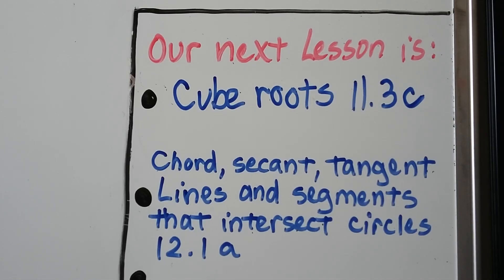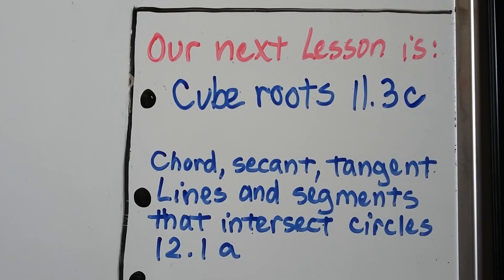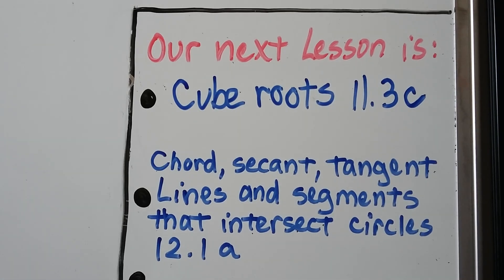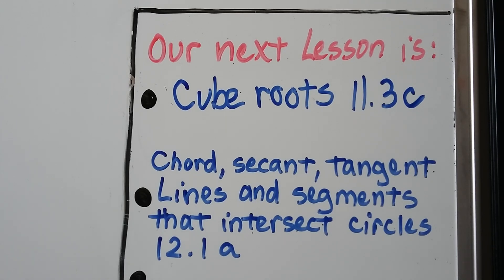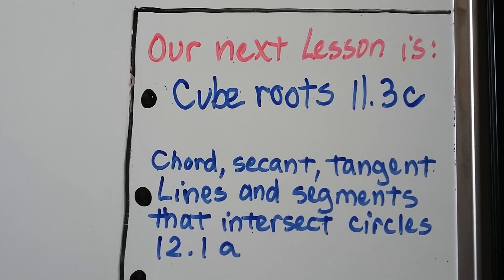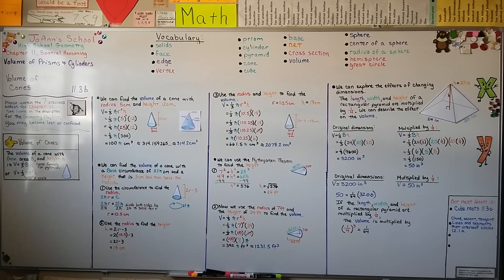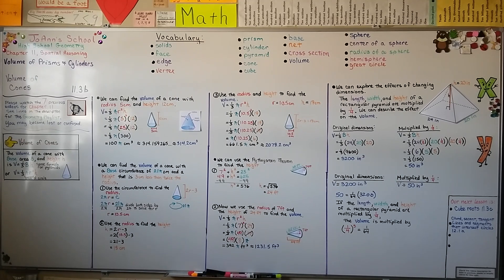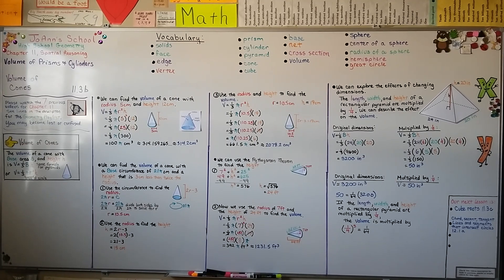The last part of the lesson, 11.3c, we're going to discuss cube roots. Then we're going to get into chapter 12, which is all about circles. We're going to start it off with 12.1a and talk about chord, secant, tangent lines and segments that intersect circles. Remember to write your formulas down in your notes where you can find them easily. I hope you're doing well, and I'll see you for the last part of lesson 11.3. Bye.